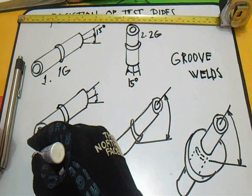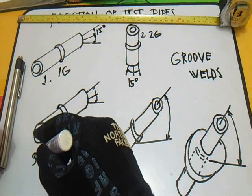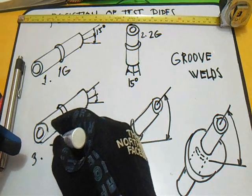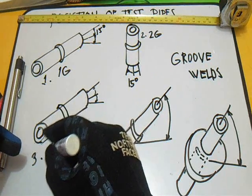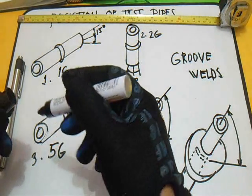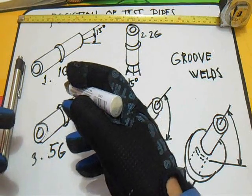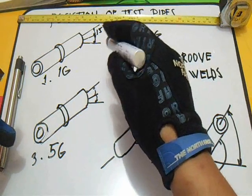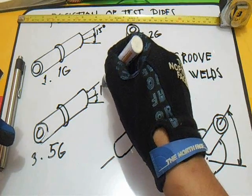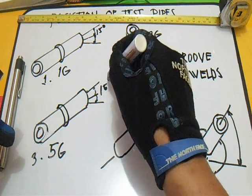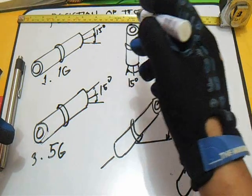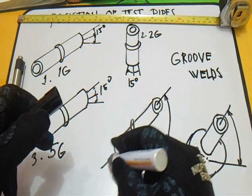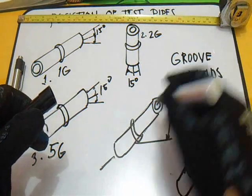Number 3: this position is 5G. 5G is horizontal, fixed by 15 degrees, and not rotated.